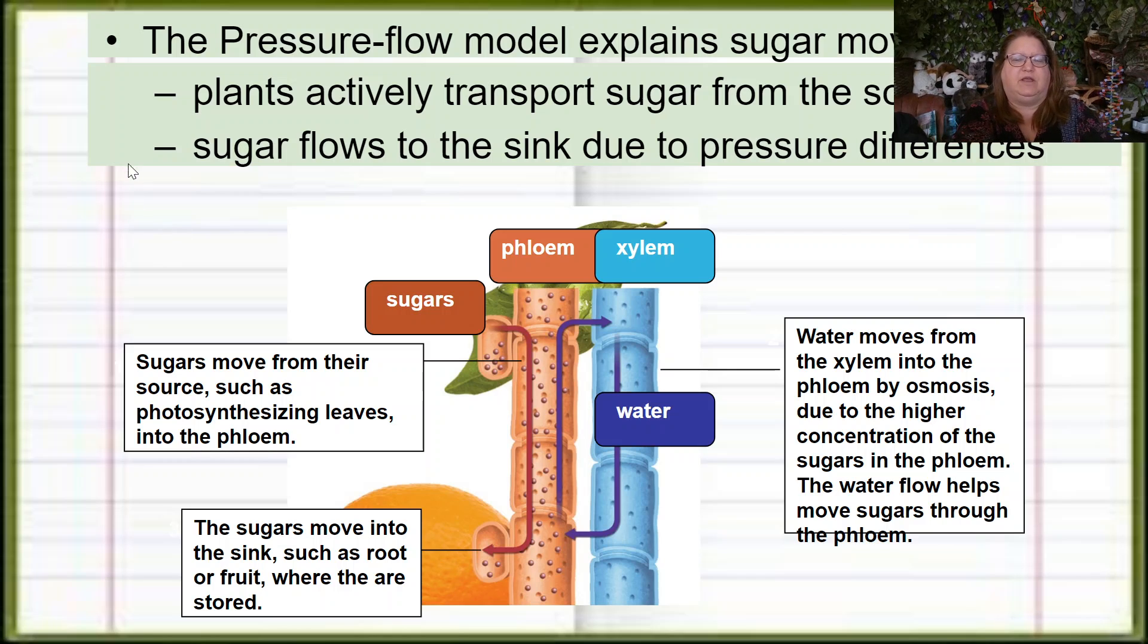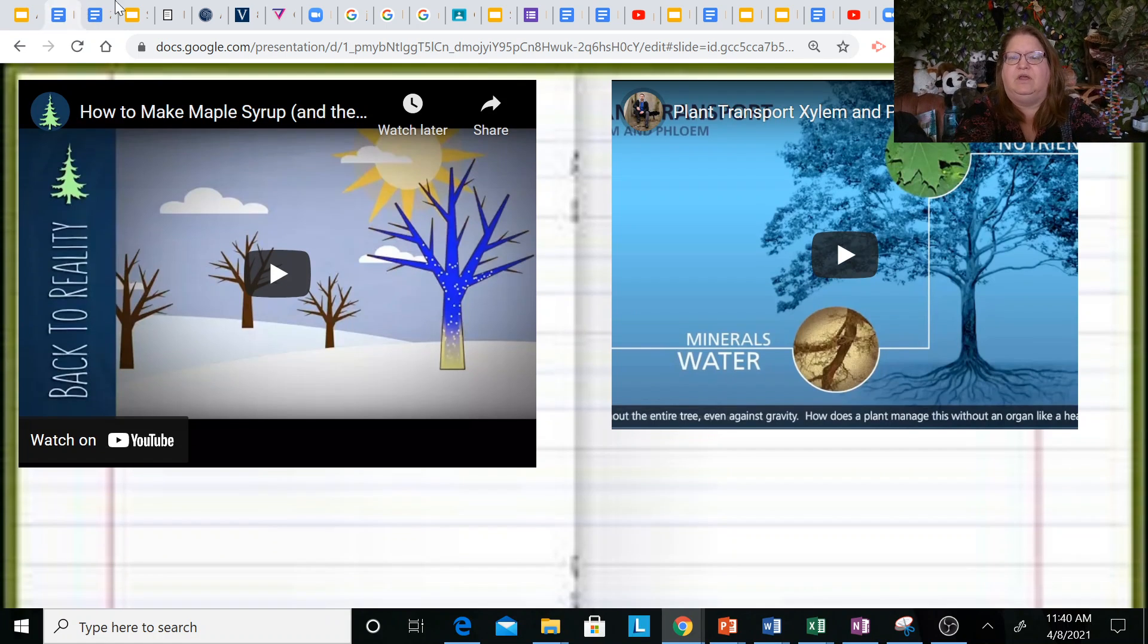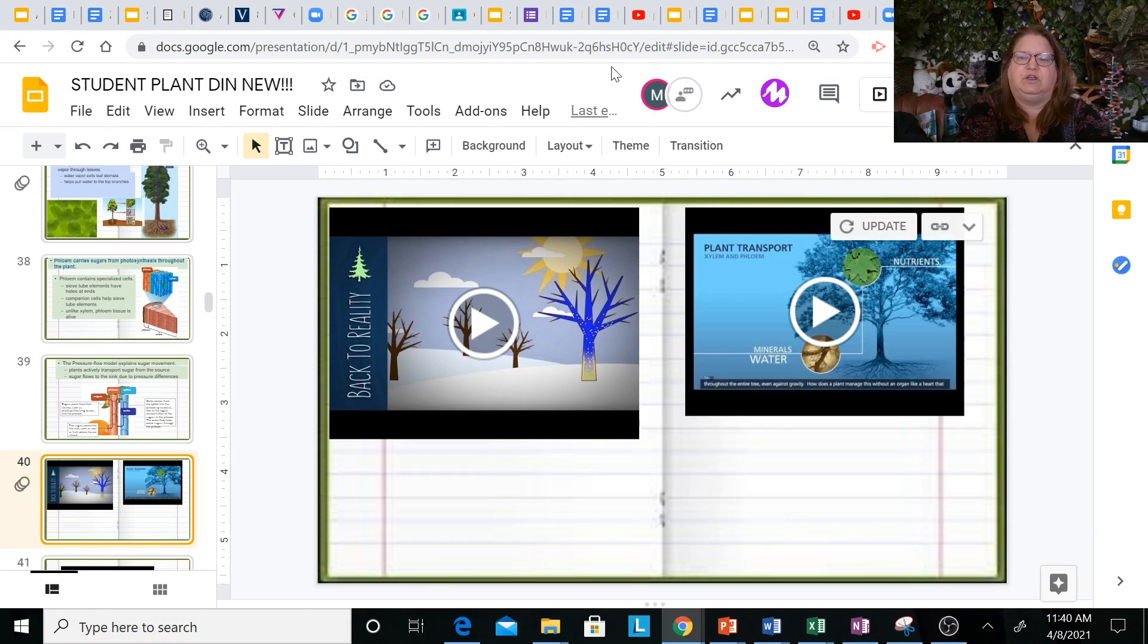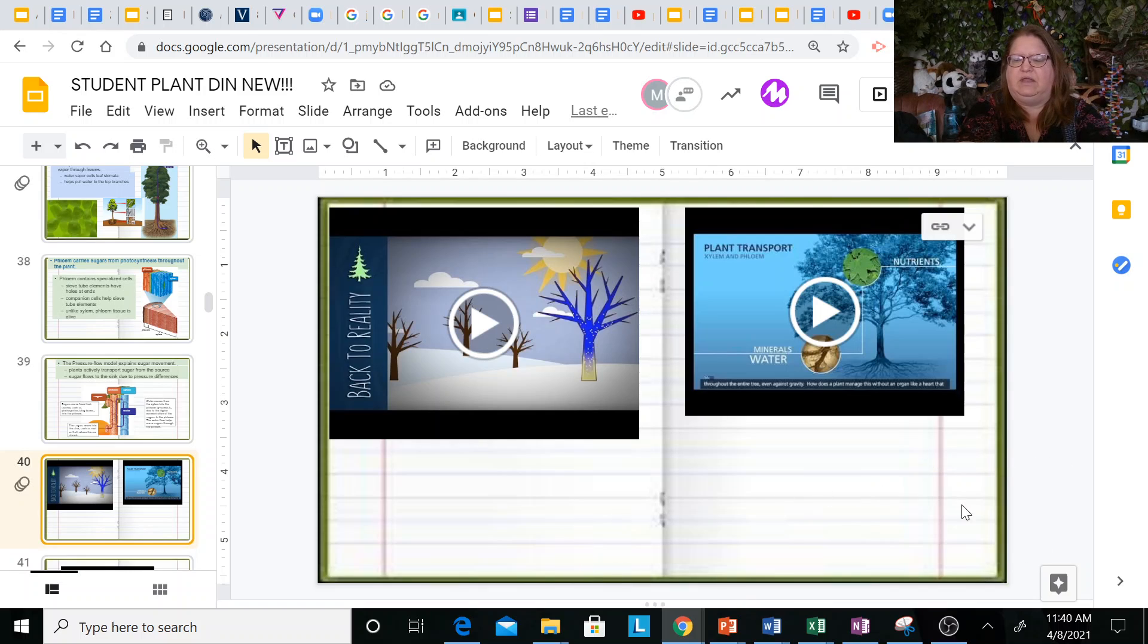The water is going to be coming from the xylem. So it's kind of this dance of where the sugars are, and then as the sugars move, the water chases it. Remember, that's a pressure. There's going to be a couple of little videos for you - one on maple syrup making, which is pretty cool, and then one on plant transport. And then you've got a couple of questions to answer. So I hope that helps you understand the processes.